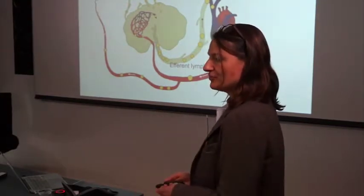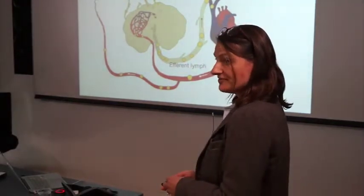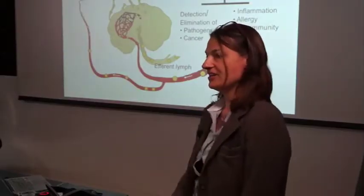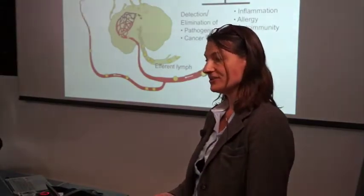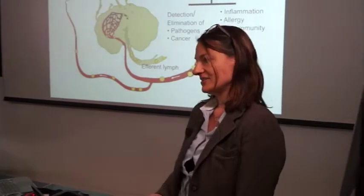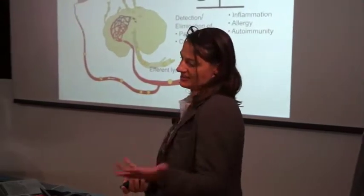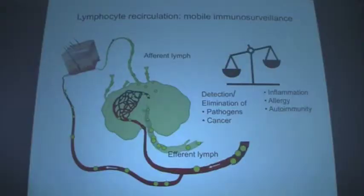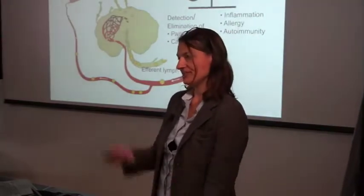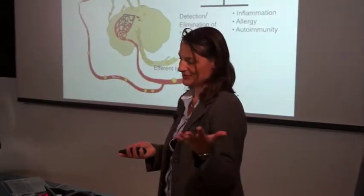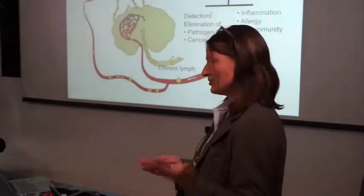This process is very important for immunosurveillance, enabling the immune system to detect and eliminate pathogens and cancerous cells throughout the body. But there's a cost — lymphocyte trafficking into tissues also promotes inflammation, allergy, and autoimmunity. So it depends on your point of view whether you want lymphocytes to recirculate through these tissues or not.